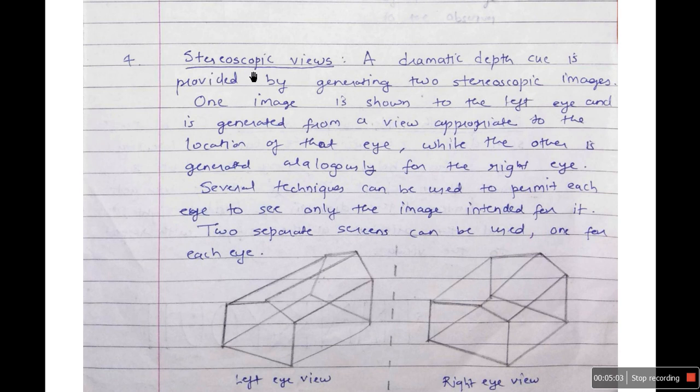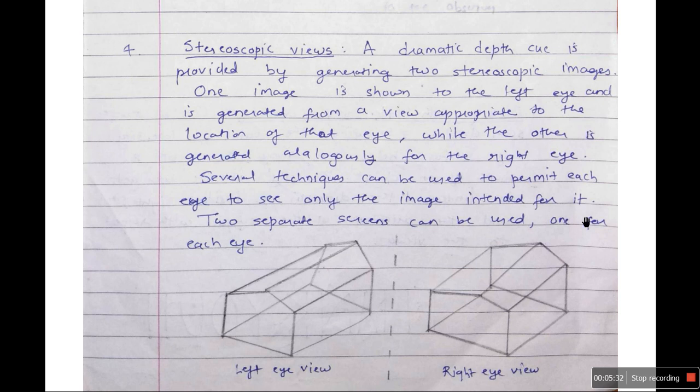Fourth one is stereoscopic view. A dramatic depth cue is provided by generating two stereoscopic images. Stereo means two. For example, you have stereo headphones, it means you have two ear pieces for two different ears. It is similar way here. One image is shown to the left eye and is generated from a view appropriate to the location of that eye. So basically what your left eye would be able to see is the image that is shown to your left eye, while the other is generated analogously for the right eye. Several techniques can be used to permit each eye to see only the image intended for it. Two separate screens can be used, one for each eye. You show this image to your left eye, you show this image to the right eye. This is called stereoscopic view. This is used for adding realism in the 3D.